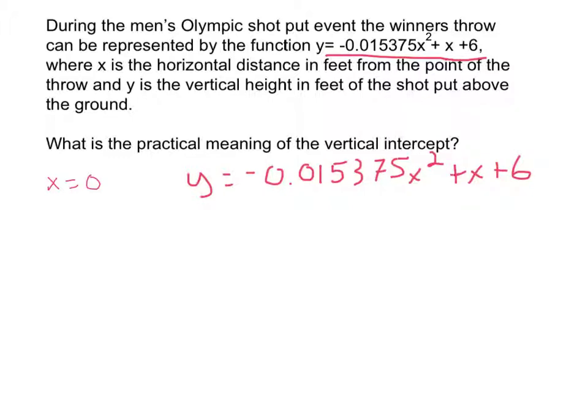Now all I'm going to do is plug in 0 for x. So y equals negative 0.015375 times 0 squared plus 0 plus 6. Well, when I'm doing this one, 0 squared is 0, times anything is always 0, plus 0, so that kind of all cancels. My y value on this one, y equals 6, because the other ones cancel out. So I've got y equals 6. So now I've got my ordered pair for my vertical intercept, and that's 0, 6.